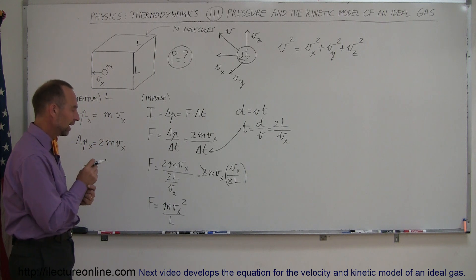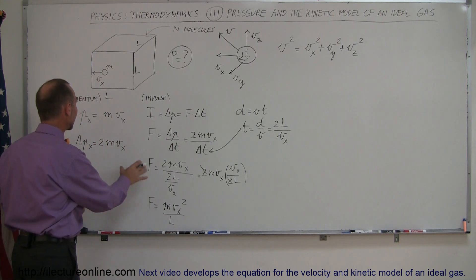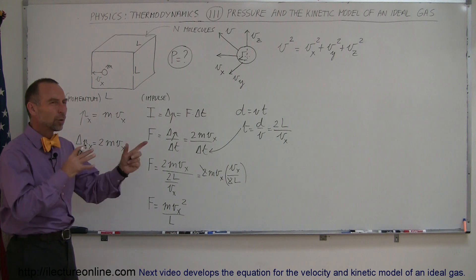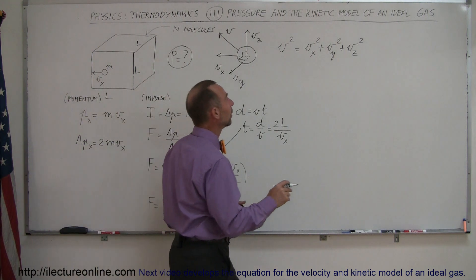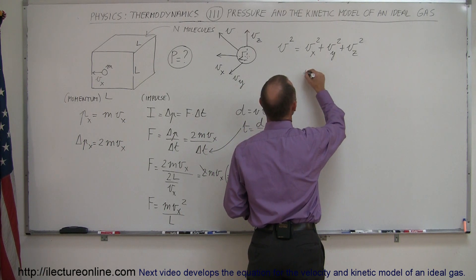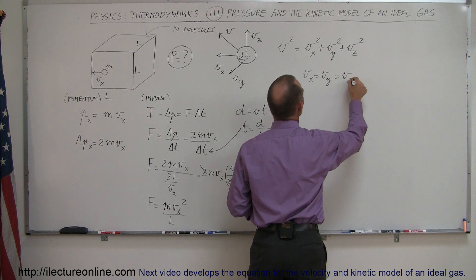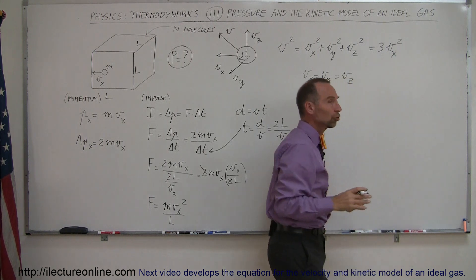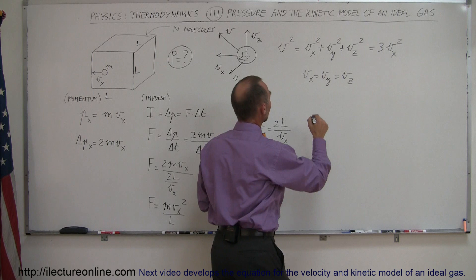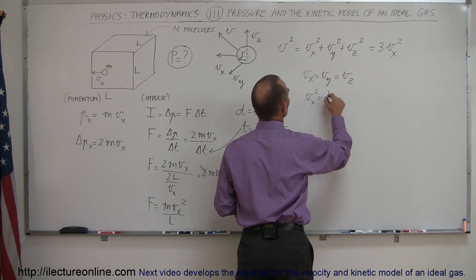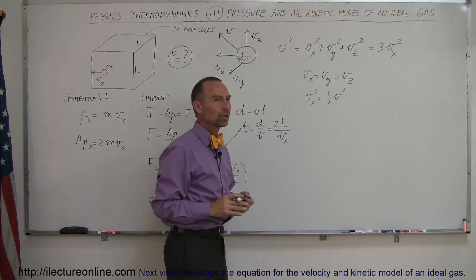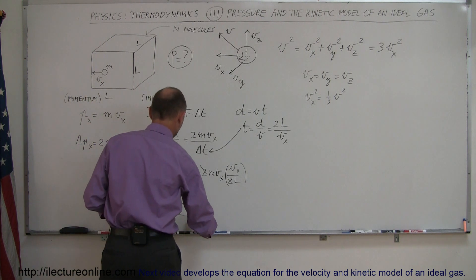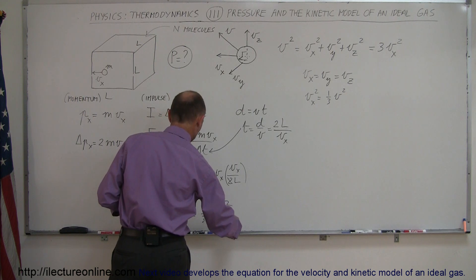That force applies to one molecule. Now considering all molecules — billions of them moving in different directions — we can say that v_x on average equals v_y equals v_z. Since v² equals v_x² plus v_y² plus v_z², and all three components are equal on average, we get v² equals 3v_x², meaning v_x² equals one-third v². Replacing v_x² in our force equation gives F equals (1/3)mv² divided by L.